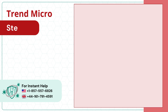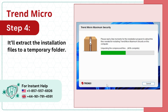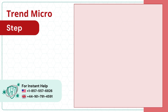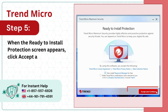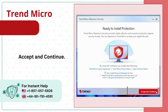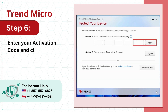Step 4: It'll extract the installation files to a temporary folder. Step 5: When the Ready to Install Protection screen appears, click Accept and Continue. Step 6: Enter your activation code and click Apply.